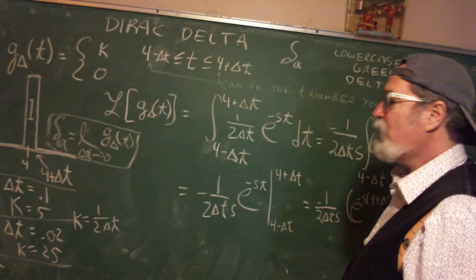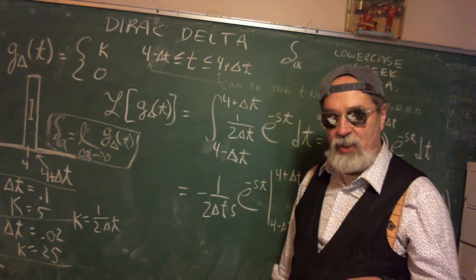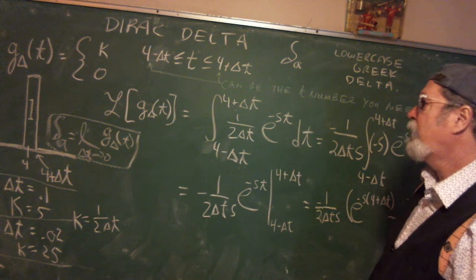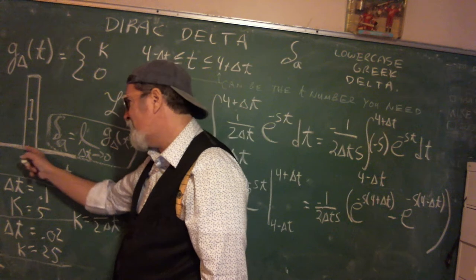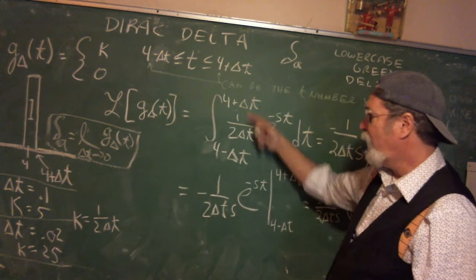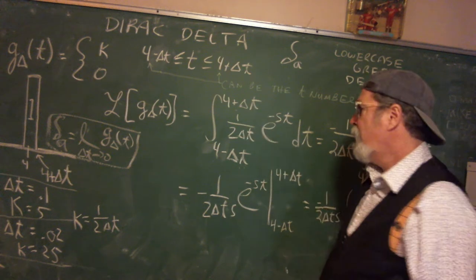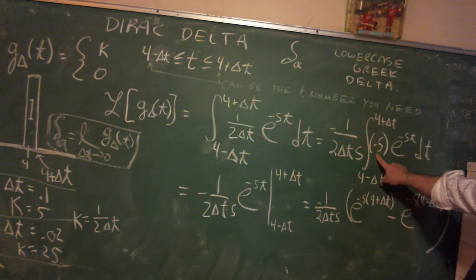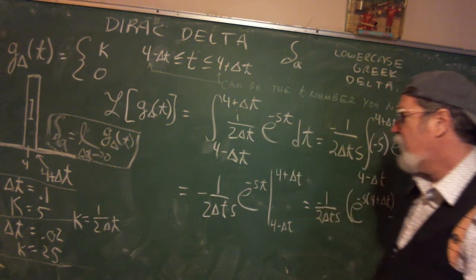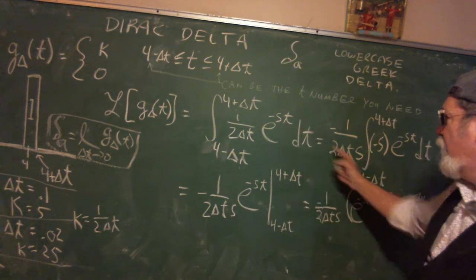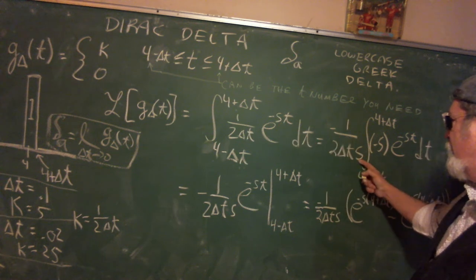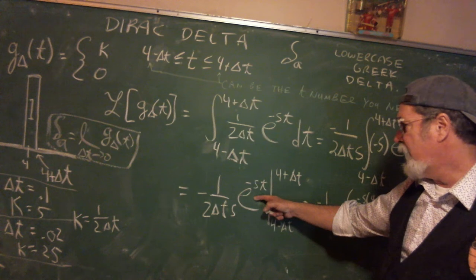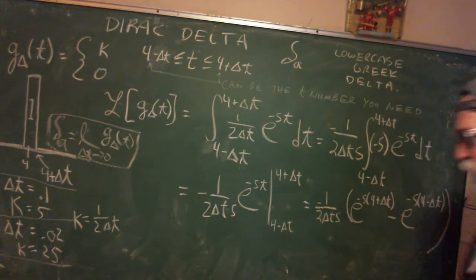We're going to do the Laplace transform of G sub delta of T — this is right out of the book, using their 4. Remember, it's the integral from zero to infinity. We have a function that's zero everywhere except for a tiny neighborhood around 4, so that's where the integral is non-zero. I've got to do a chain rule adjustment because 1 over 2 times delta T is just a constant, so I drag that out front, but I need a negative S outside to cancel the negative S from the exponent. So now I can do this integral: get the number out front, E to the negative ST, evaluate it, and just put in the evaluation.